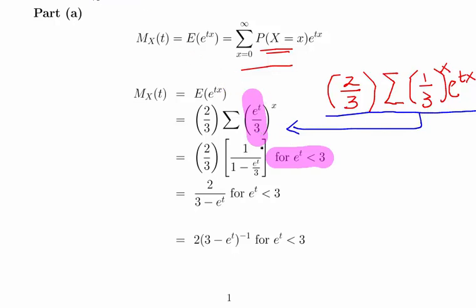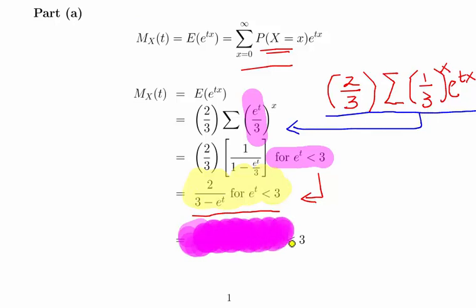Using the laws of sequences and series, we can express this summation as an infinite geometric series where r < 1, giving us 1 over (1 − e^t/3). Including the (2/3) factor out front, and then multiplying the numerator by 2 and the denominator by 3, we get 2 divided by (3 − e^t), valid for e^t < 3. I'll re-express it in a slightly different form to make the subsequent calculations for the mean and variance as clear as possible.